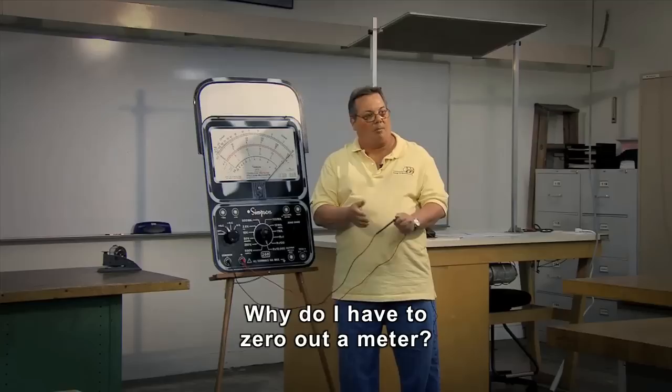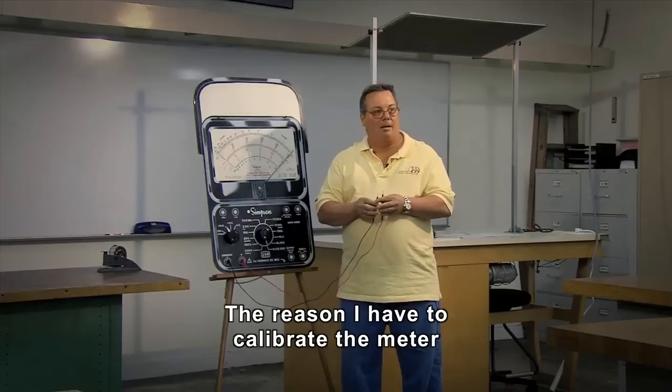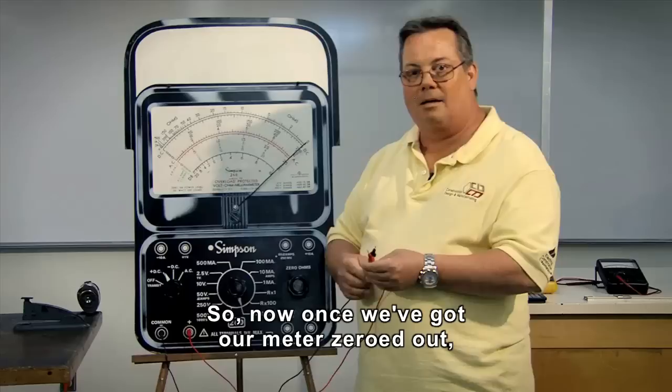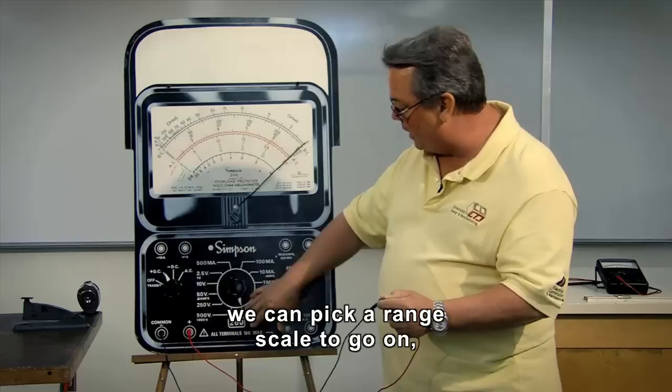Why do I have to zero out a meter? Well if I want to get an accurate resistance reading, I have to calibrate it. The reason I have to calibrate the meter is because there's a battery in there. And as the battery weakens, it's going to change the values that it reads. So now once we've got our meter zeroed out,